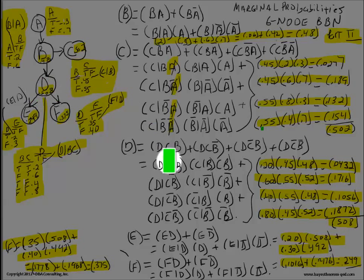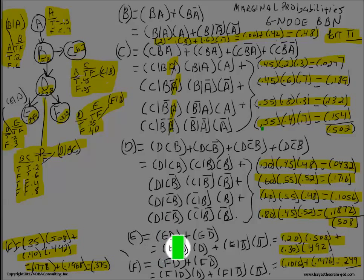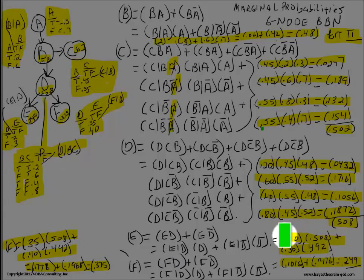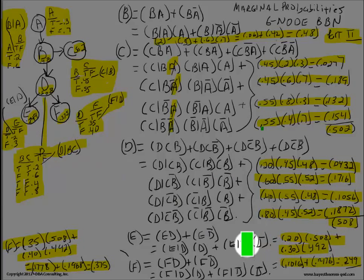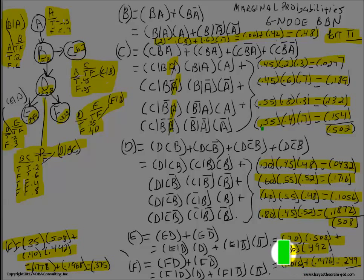For E, probability of E equals P(E,D) plus P(E, not-D). Using the chain rule: E given D times D plus E given not-D times not-D. Probability of E given D is 0.2, and probability of D is 0.508, plus probability of E given not-D which is 0.3, times probability of not-D which is 1 minus 0.508 = 0.492. Multiply 0.2 × 0.508 = 0.1016. Multiply 0.3 × 0.492 = 0.1476. Add these together, you get 0.249 for the marginal probability of E.